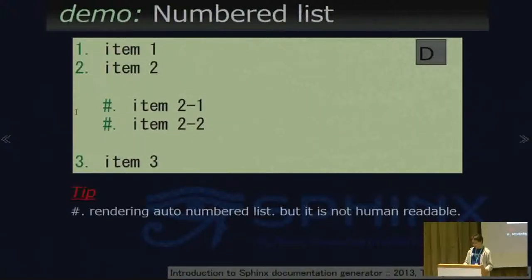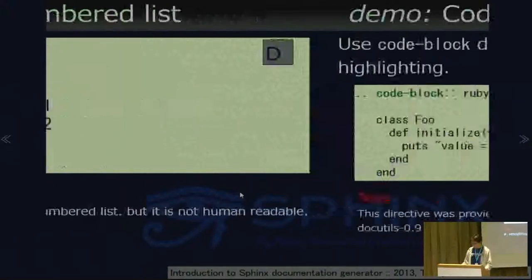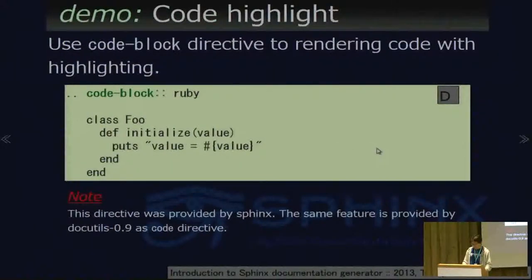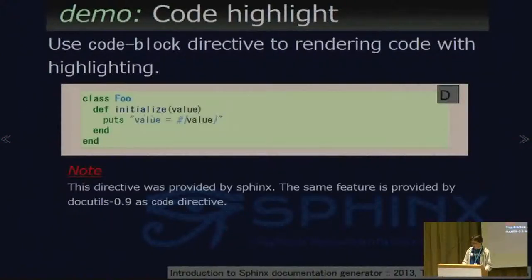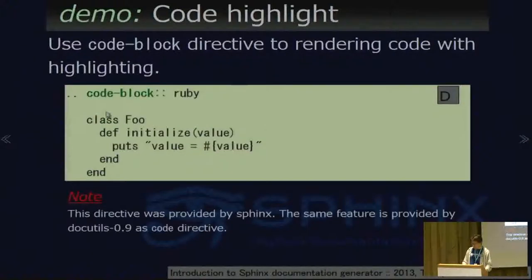I always recommend using a number-dot syntax instead of sharp-dot. And code highlighting — this is a Ruby code example, but highlighting works well. The code-block directive supports RST, Python, C++, or other formats.